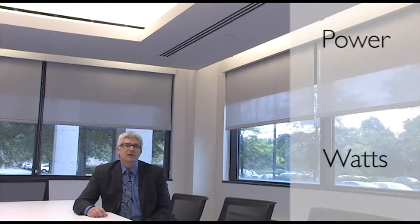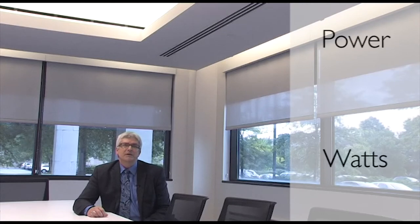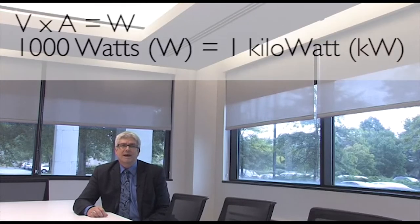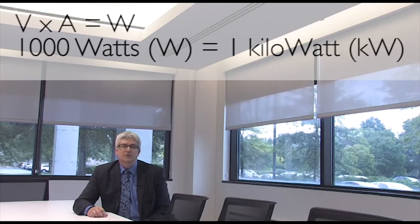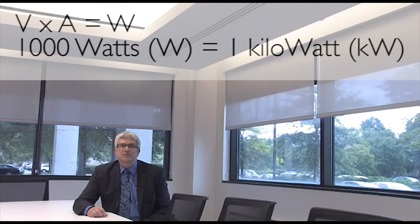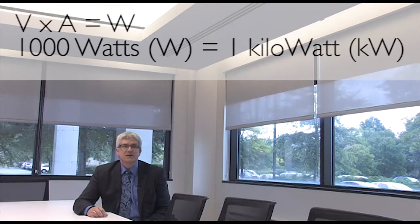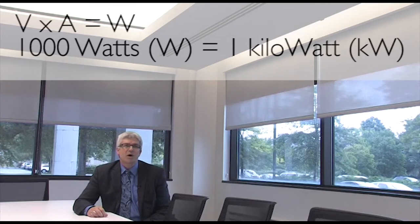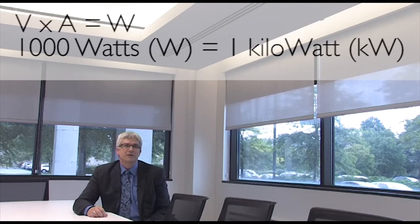Power is the base unit and measured in watts. When you multiply the amps times the volts, the result is watts — the total amount of energy in a circuit at a given moment. V times A is equal to W. A thousand watts is equal to one kilowatt.